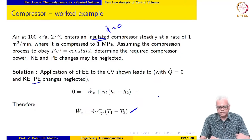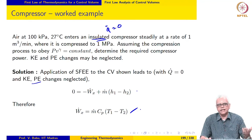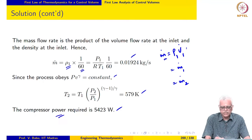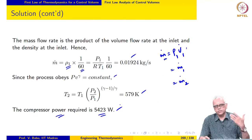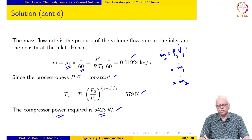Notice that this expression technically yields a negative number, but we say that the compressor power is 5423 watts. The understanding is that the compressor requires input power, so the negative sign is dropped with that understanding.